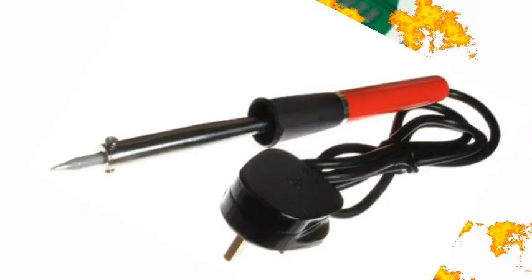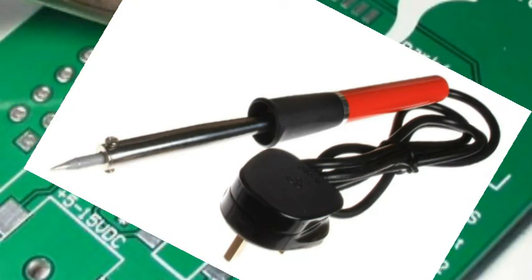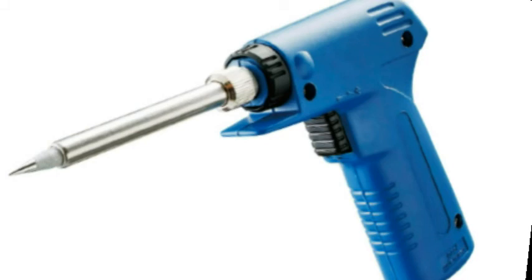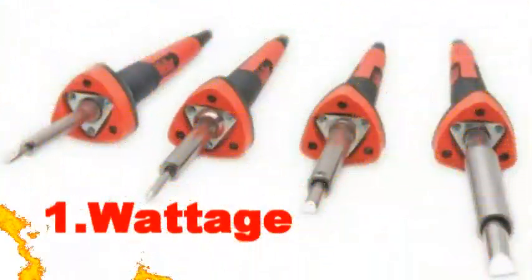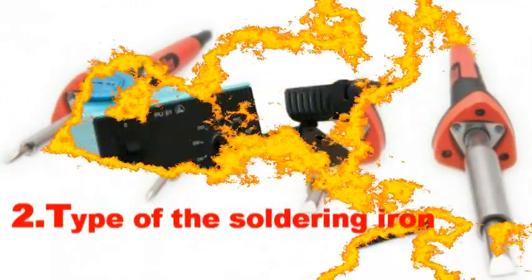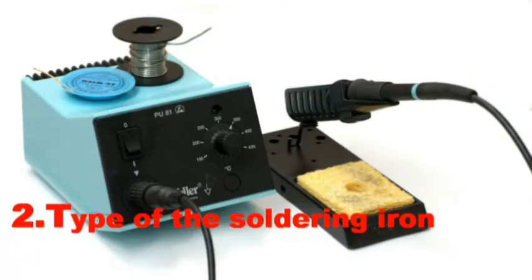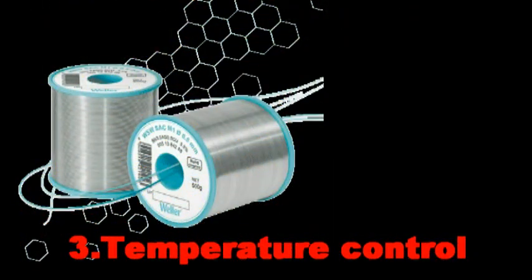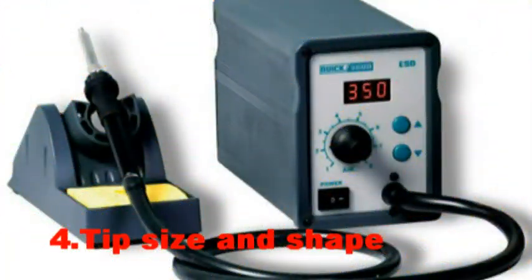For soldering and desoldering work on circuit boards, the four main factors to consider when choosing a soldering iron are: one, wattage; two, type of soldering iron; three, temperature control; and four, tip size and shape.